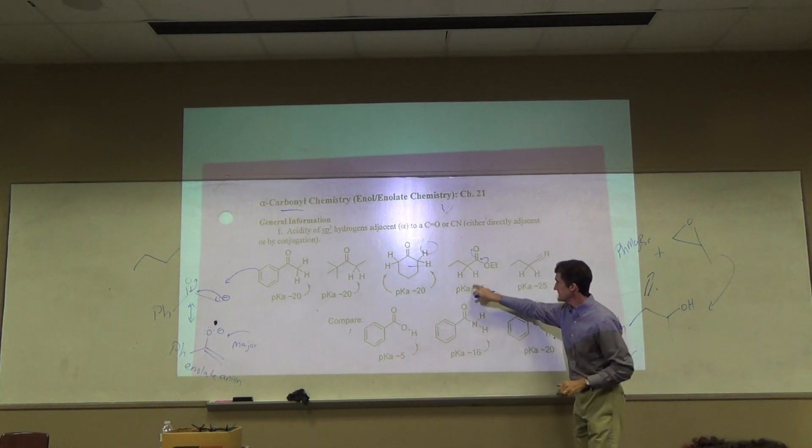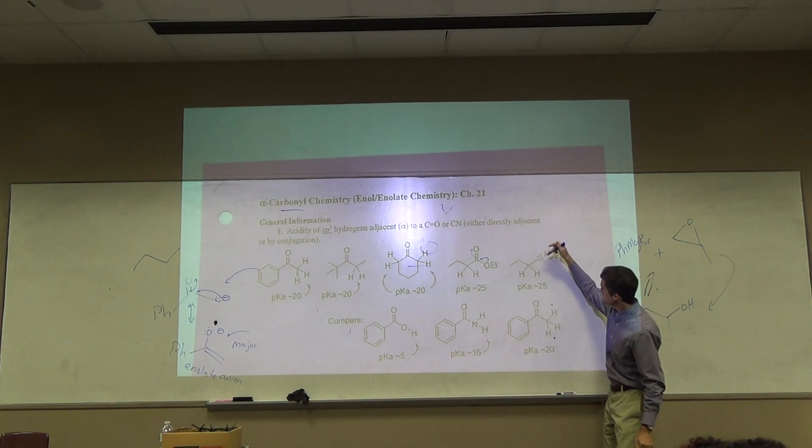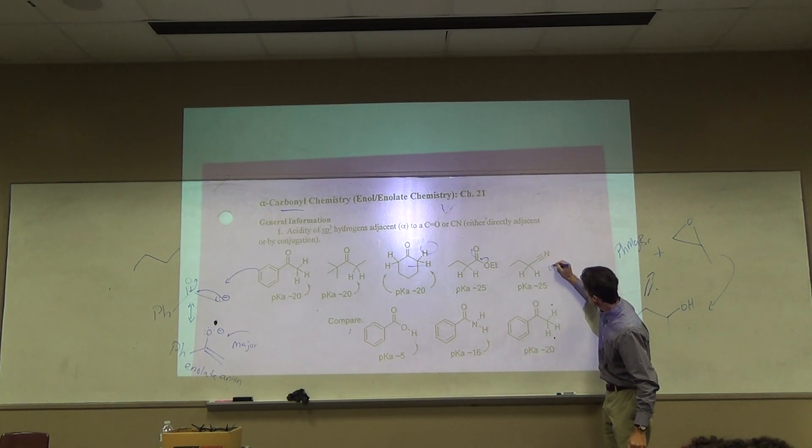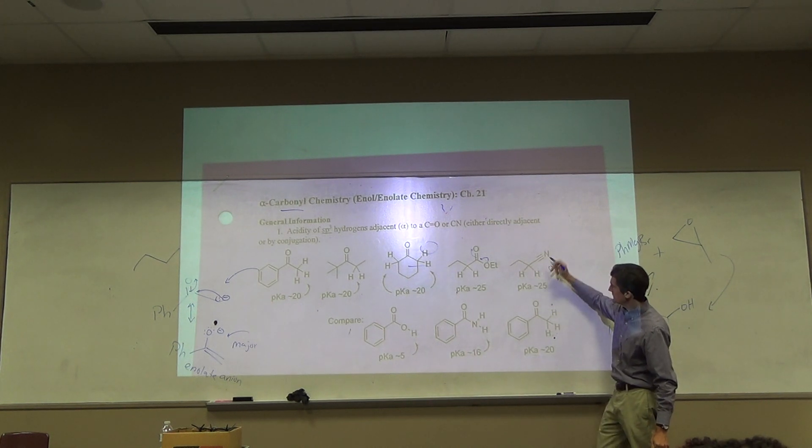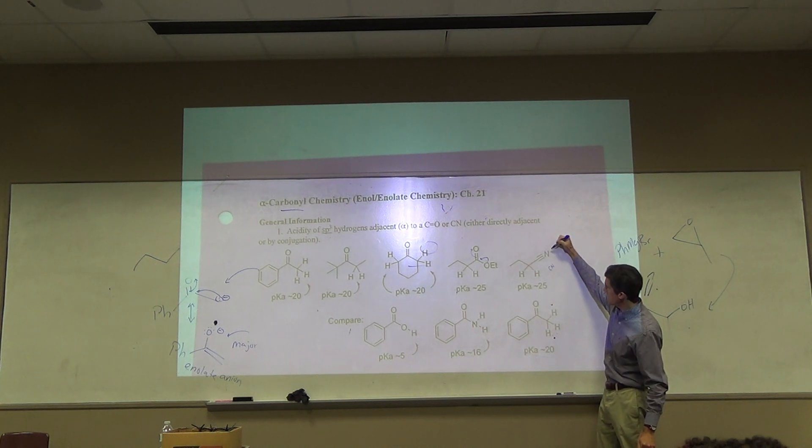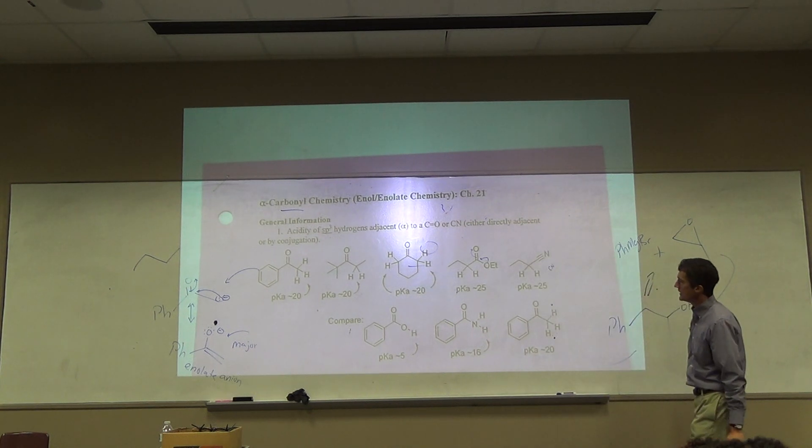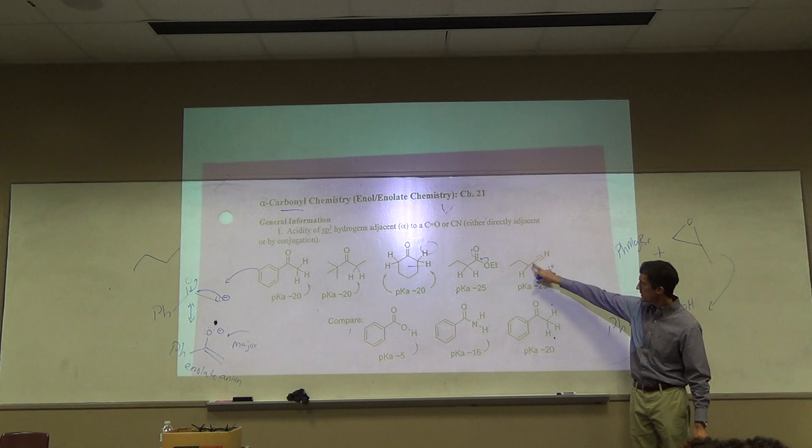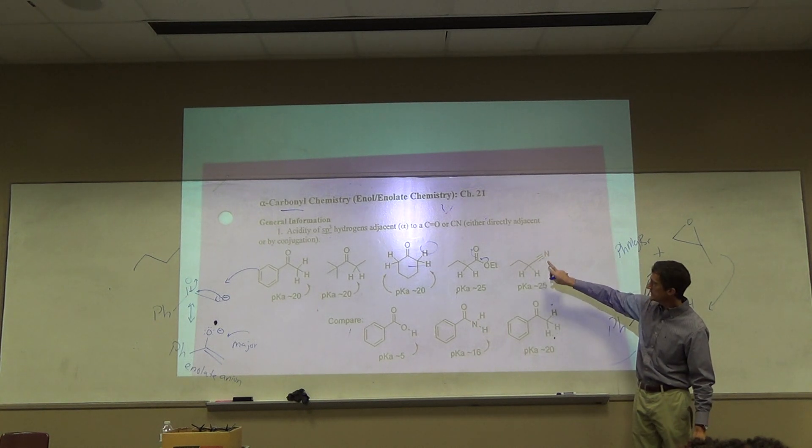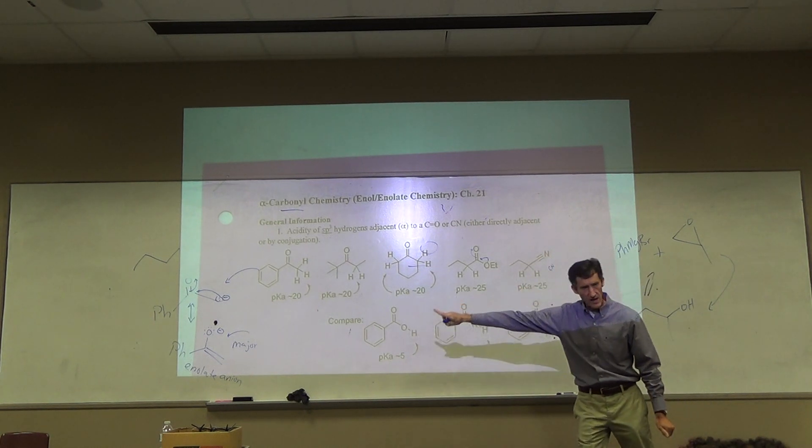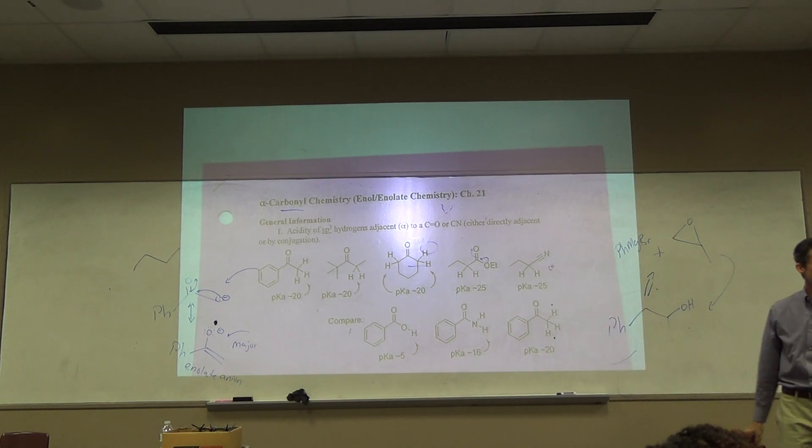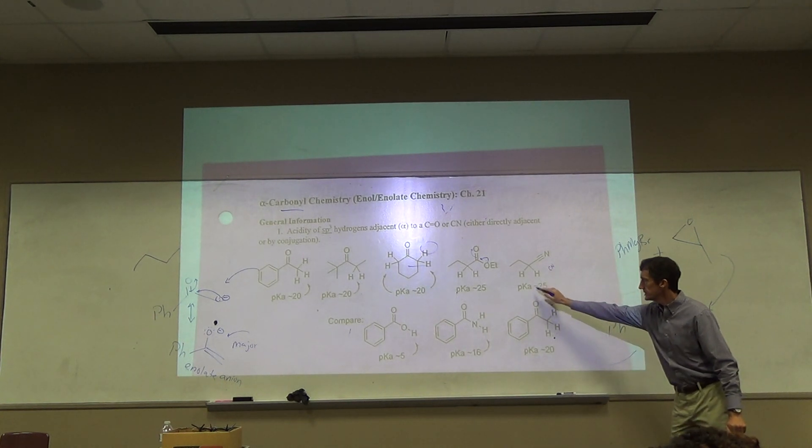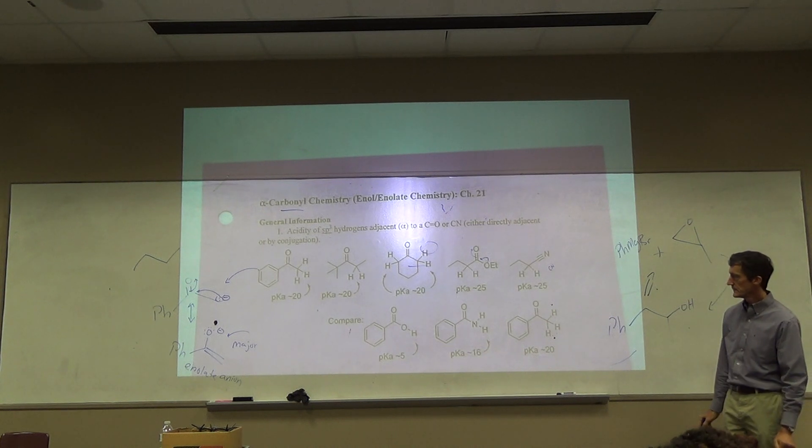Esters are not quite as acidic on the alpha CH. Nitriles. Now, this is a CN group, right? Just shown fully. These also have some acidity because the anion would be resonance stabilized. You should show resonance. The charge could be delocalized onto nitrogen, but since nitrogen is not as electronegative as oxygen, it's not going to be as good as when it's oxygen. So it's not quite as acidic.